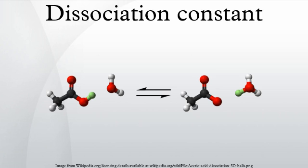In chemistry, biochemistry, and pharmacology, a dissociation constant is a specific type of equilibrium constant that measures the propensity of a larger object to separate